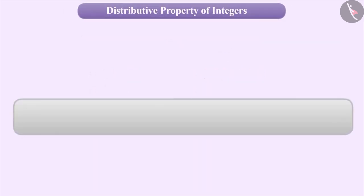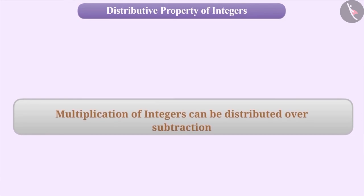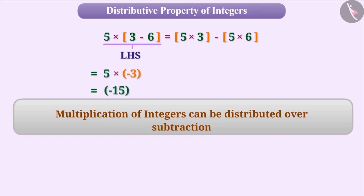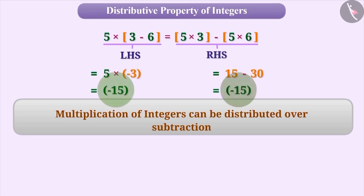Multiplication of integers can also be distributed over subtraction. For example, 5 × (3 − 6) = 5 × 3 − 5 × 6. The value of the LHS: 5 × (3 − 6) = 5 × (−3) = −15. Similarly, the value of the RHS: 5 × 3 − 5 × 6 = 15 − 30 = −15. The result is the same in both cases.